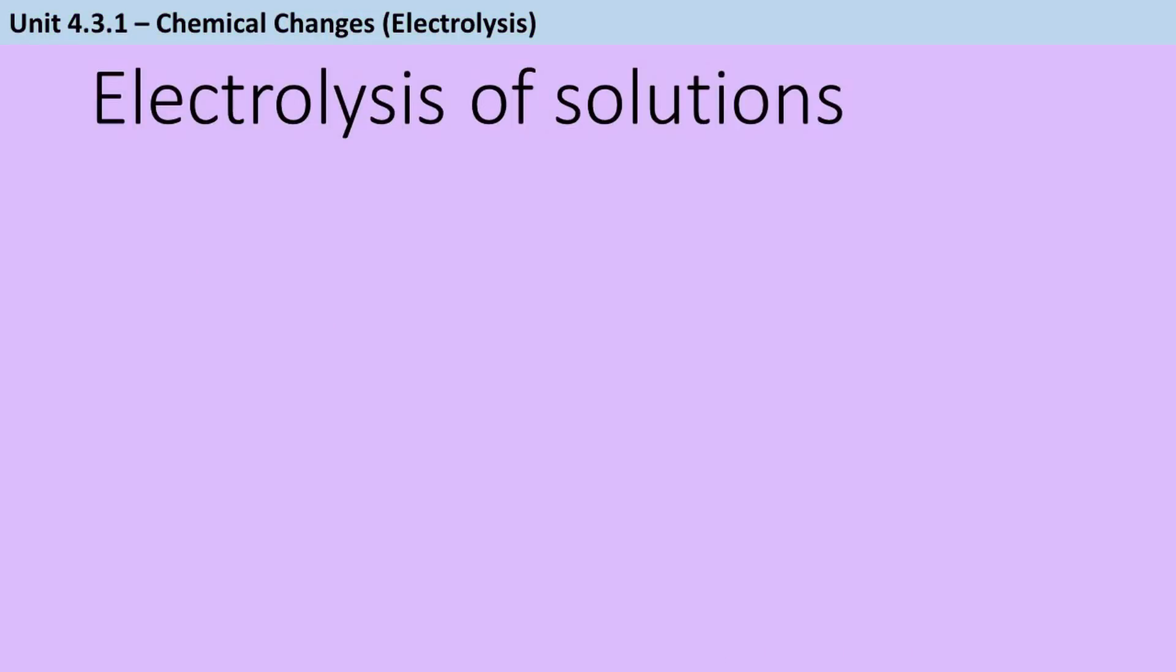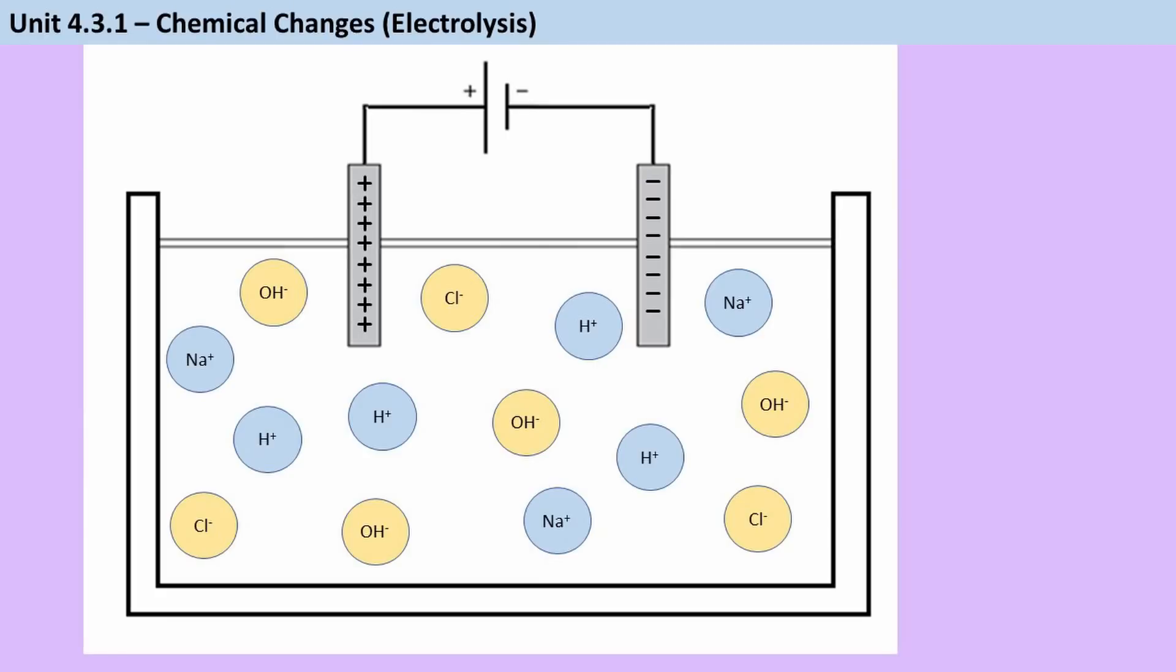So that was all about molten compounds, ones that have been heated up until they're liquids. The alternative is that you dissolve something in water, so it's a solution, it's aqueous. When we electrolyse the solution, we have an added complication. We obviously have the same positive and negative ions, the cations and anions that we started with, but we now also have some ions that come from the water. H plus ions and OH minus ions, which are also called hydroxide ions.